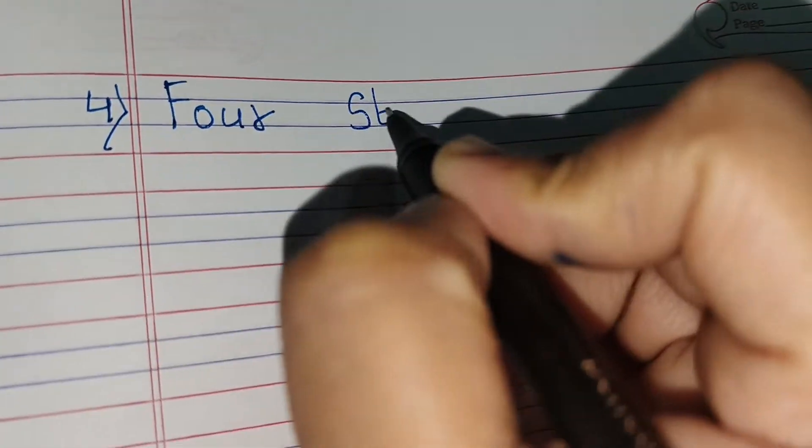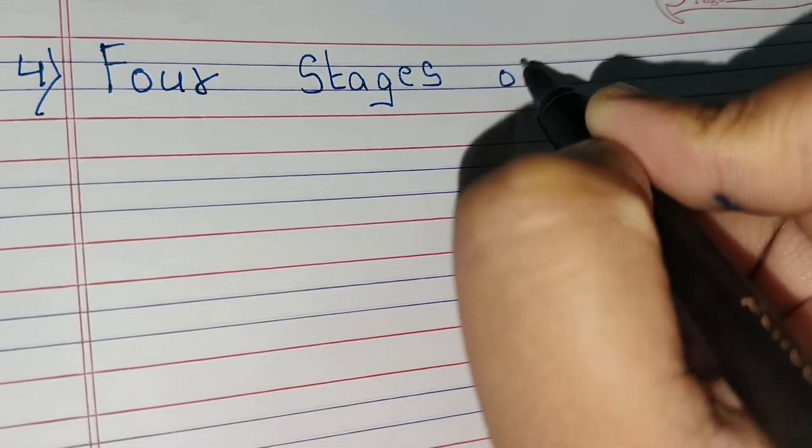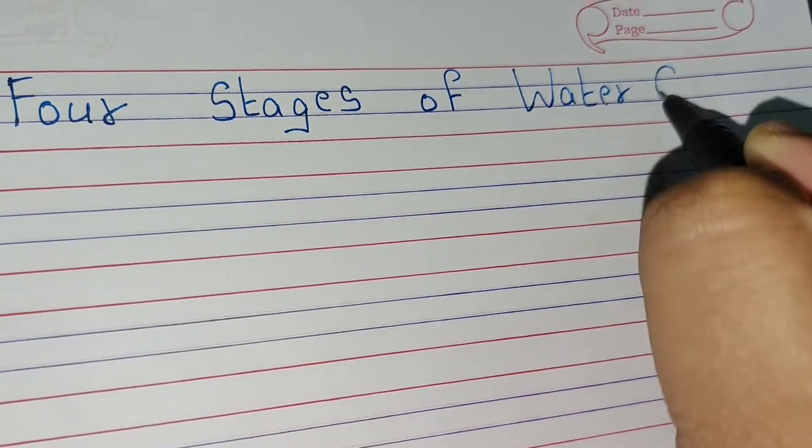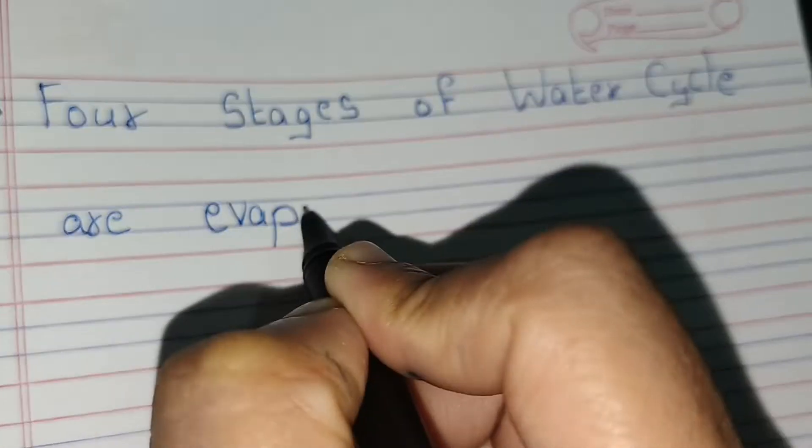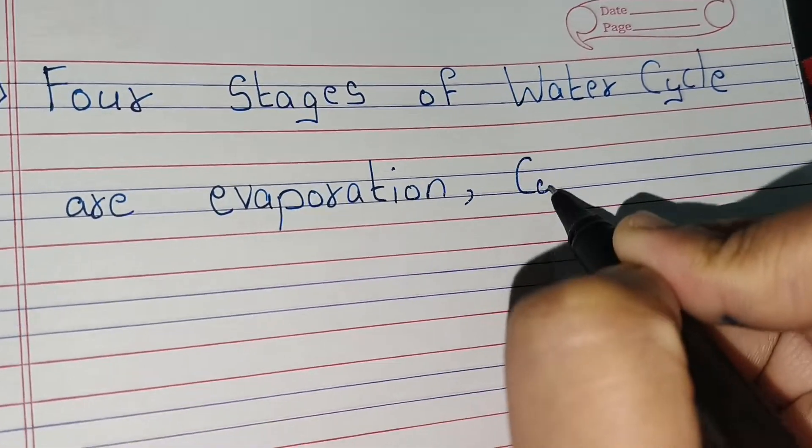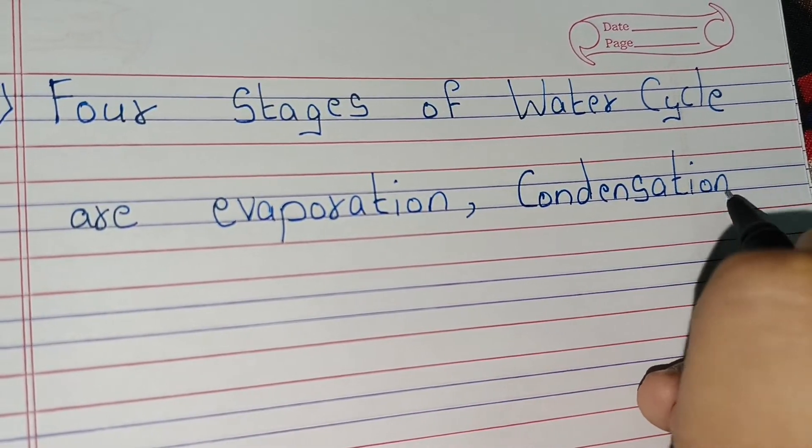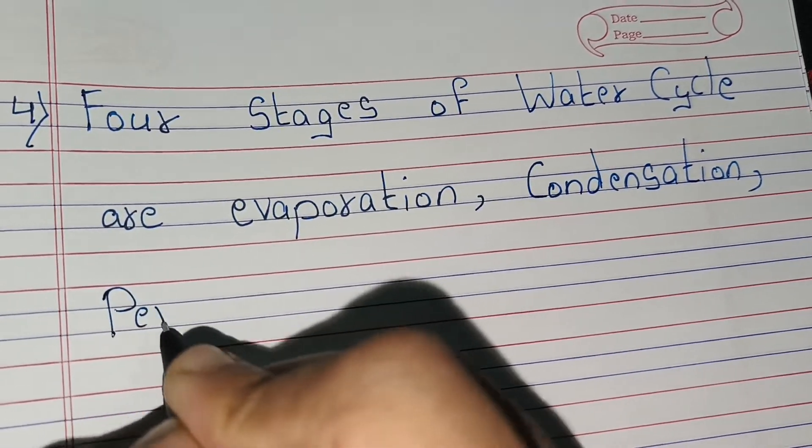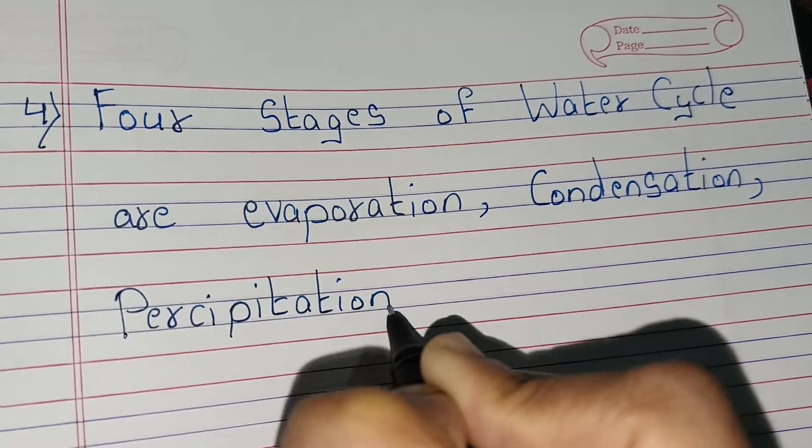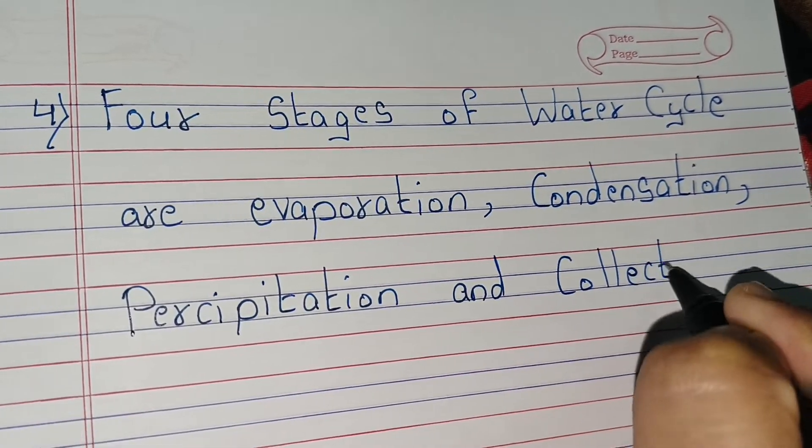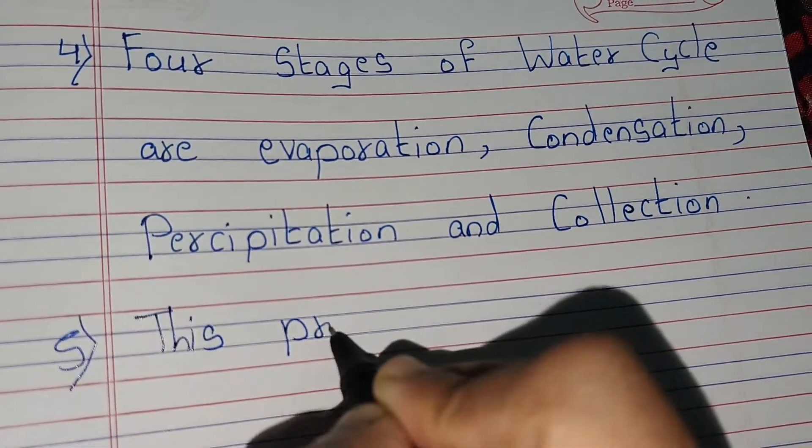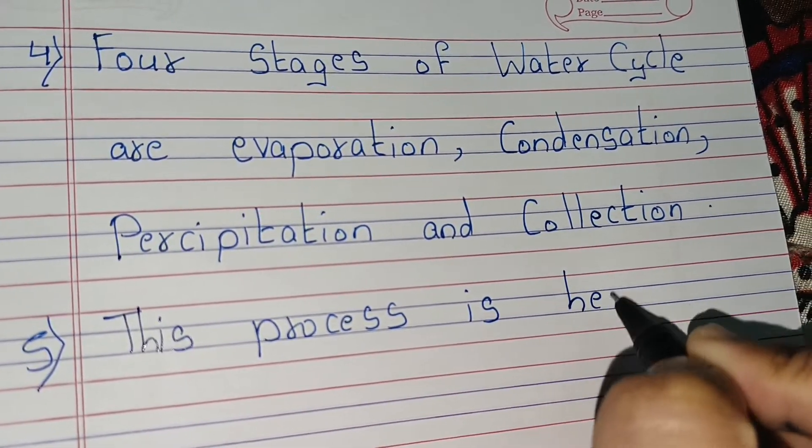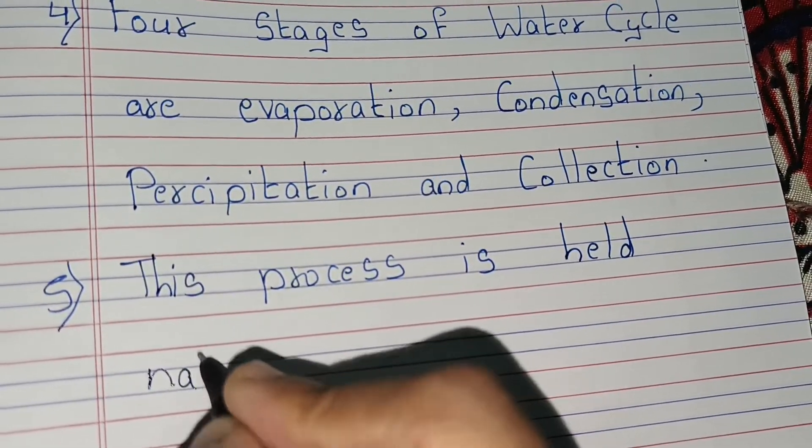4 stages of water cycle are evaporation, condensation, precipitation, and collection. This process is held naturally in the atmosphere.